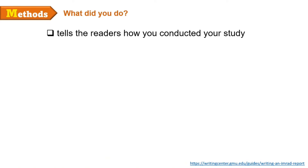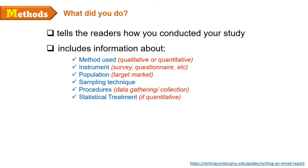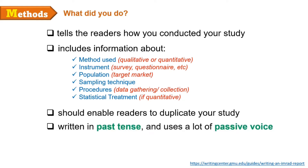Next to the introduction is the method section. It answers the question: What did you do? The method section tells readers how you conducted your study. It includes information about the method used, instrument, population, sampling technique, procedures, and statistical treatment. The gold standard of the method section is that it should enable readers to duplicate your study — meaning other researchers who conduct similar studies can use your study as a reference. Method sections typically use subheadings, are written in past tense, and use a lot of passive voice.